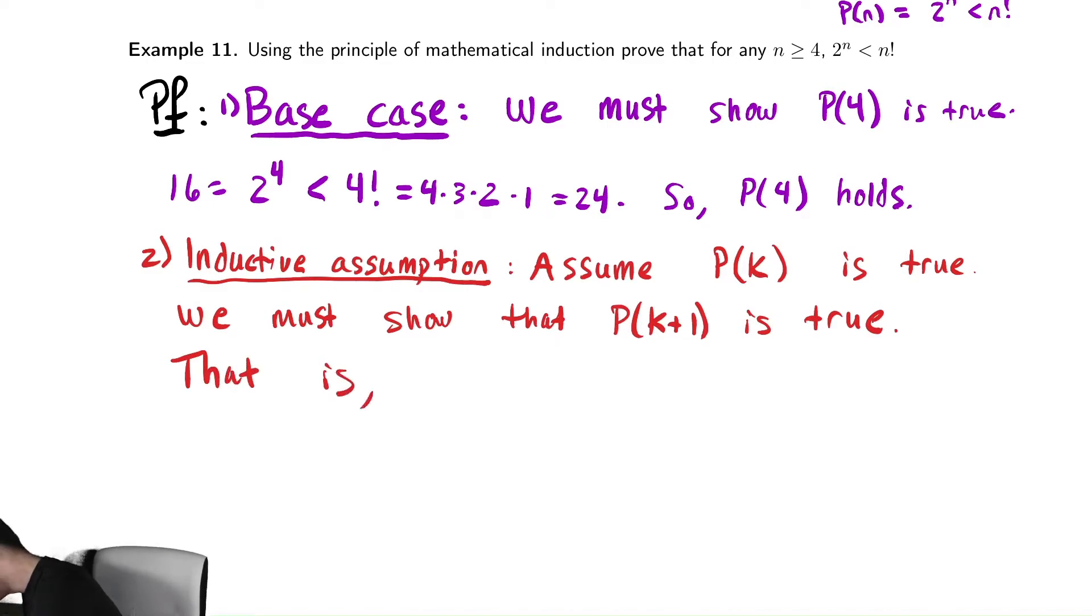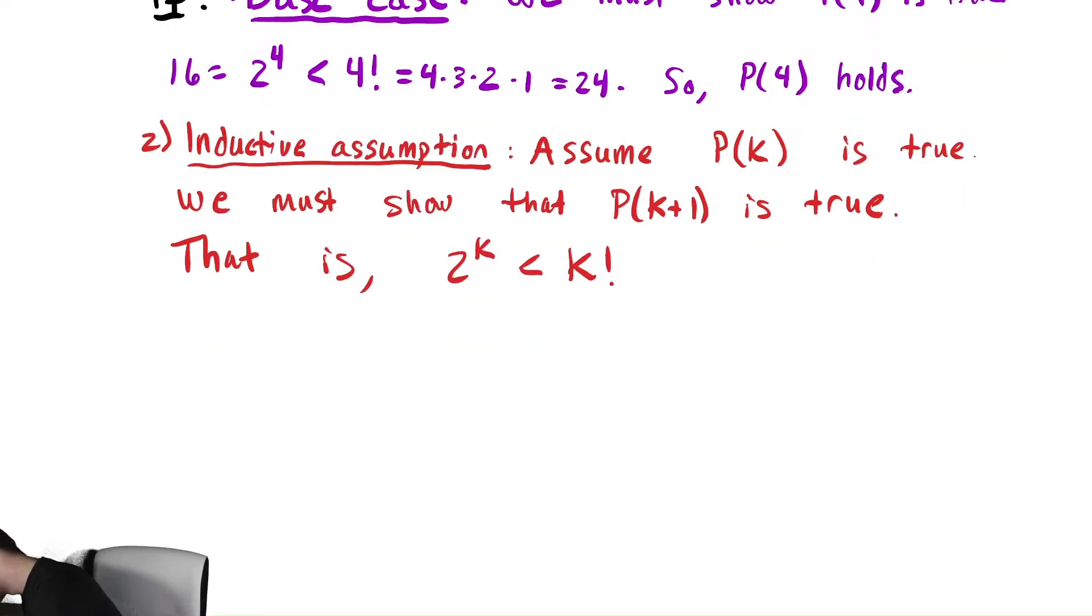So we know for certain that 2^k is less than k factorial. We need to show that 2^(k+1) is less than (k+1) factorial.